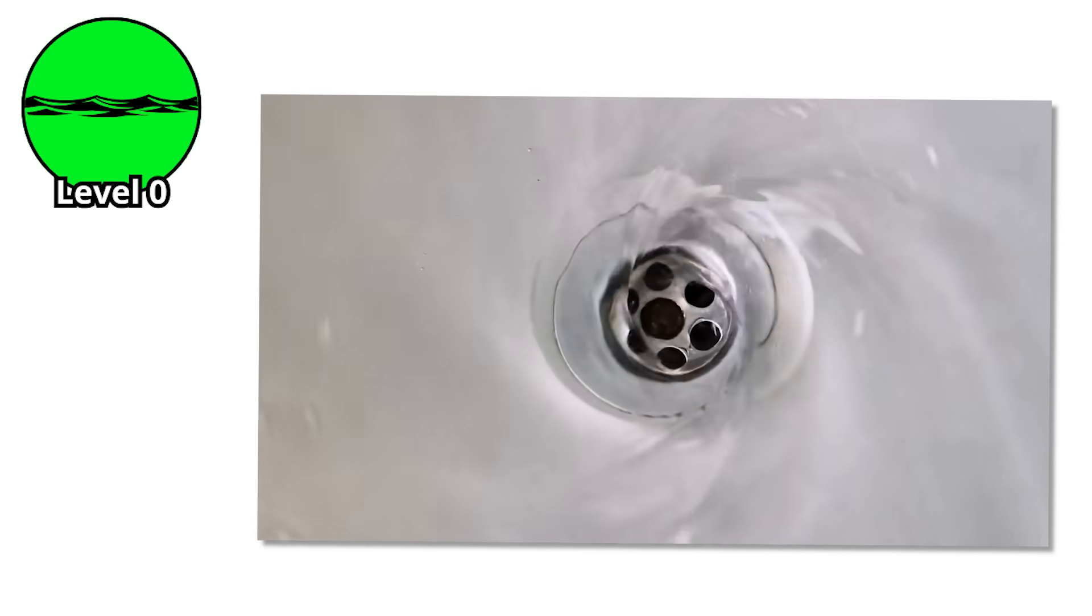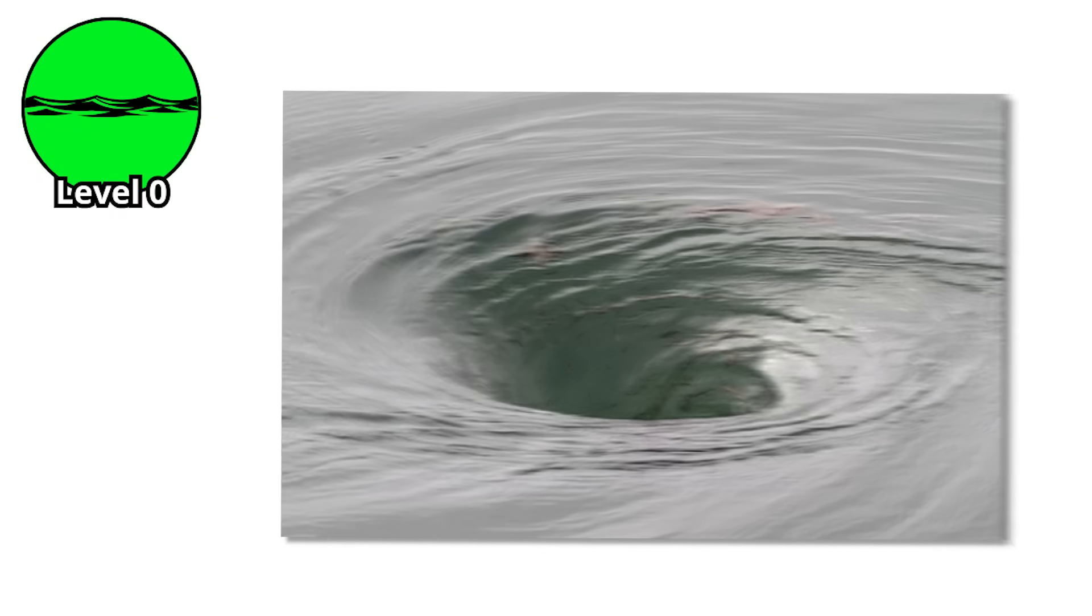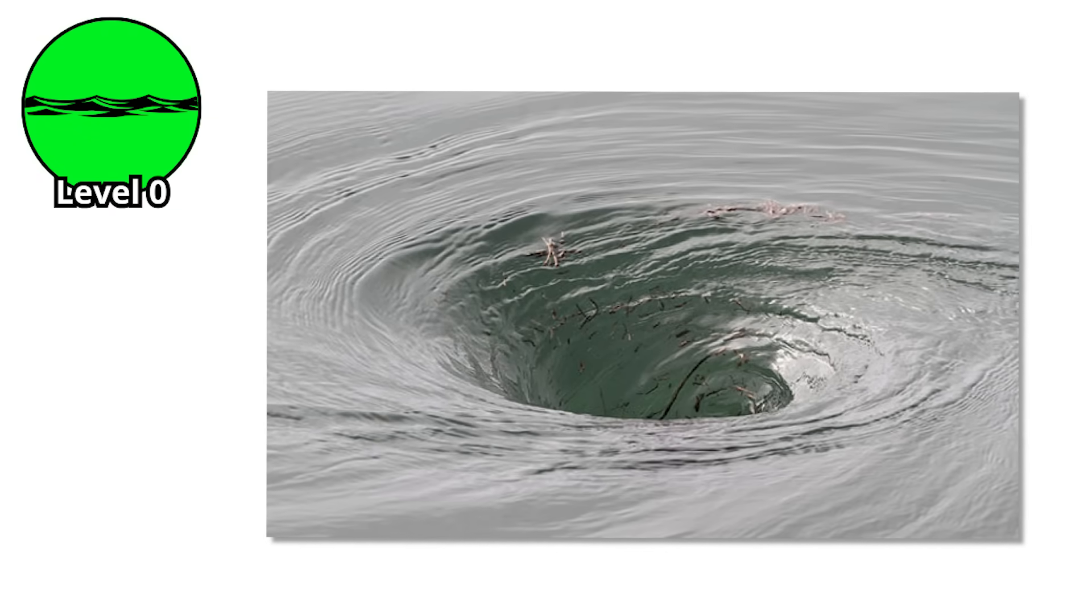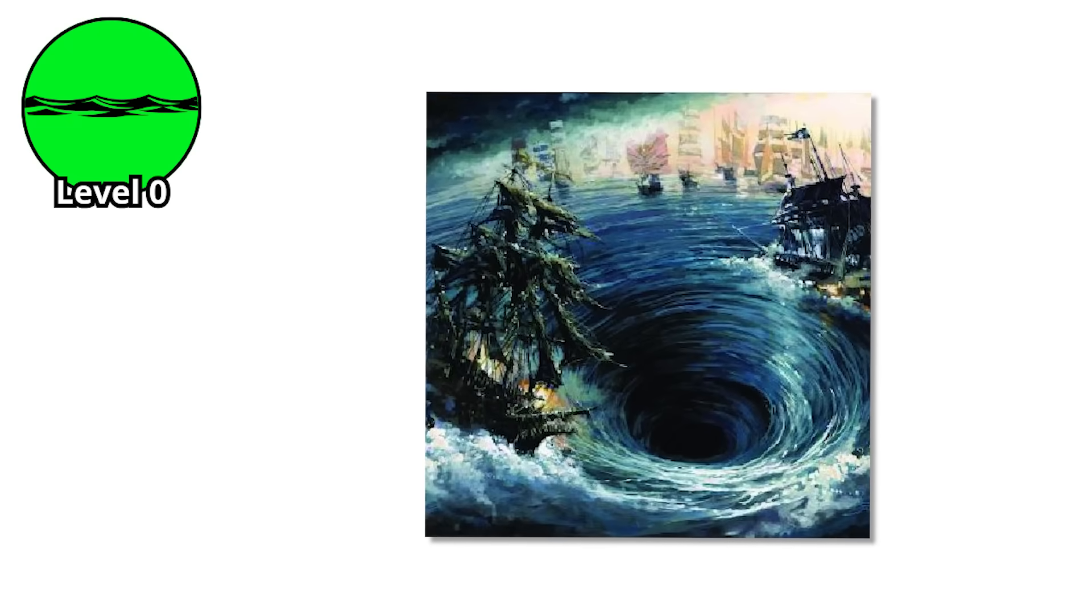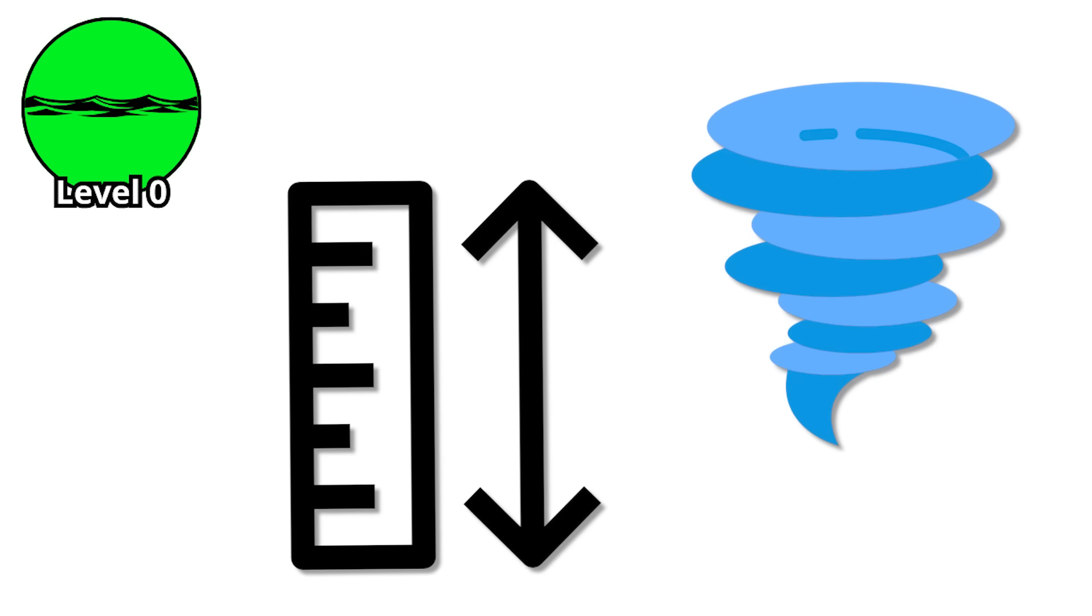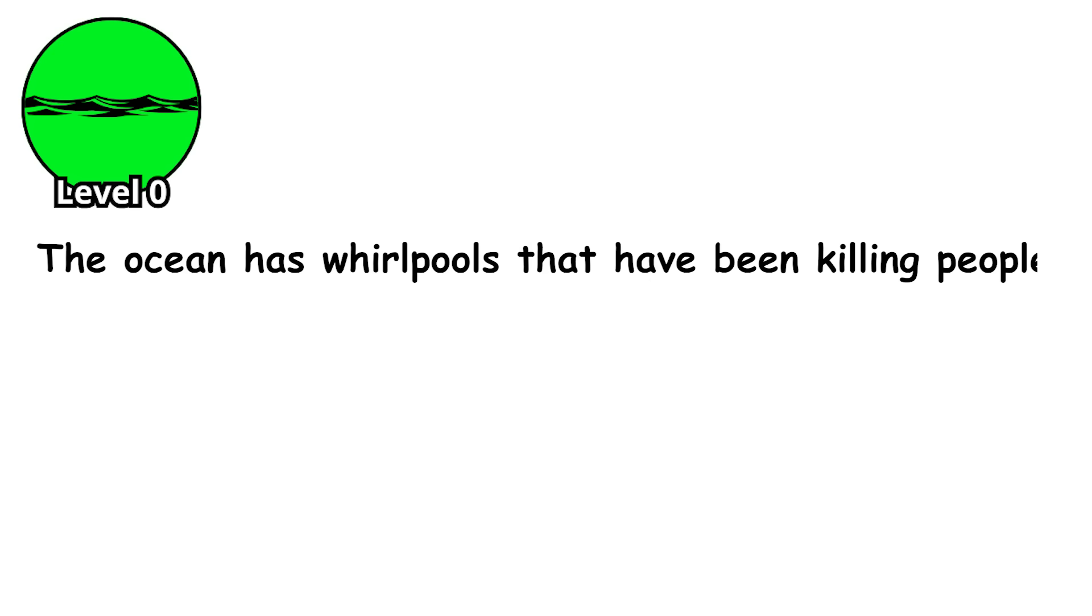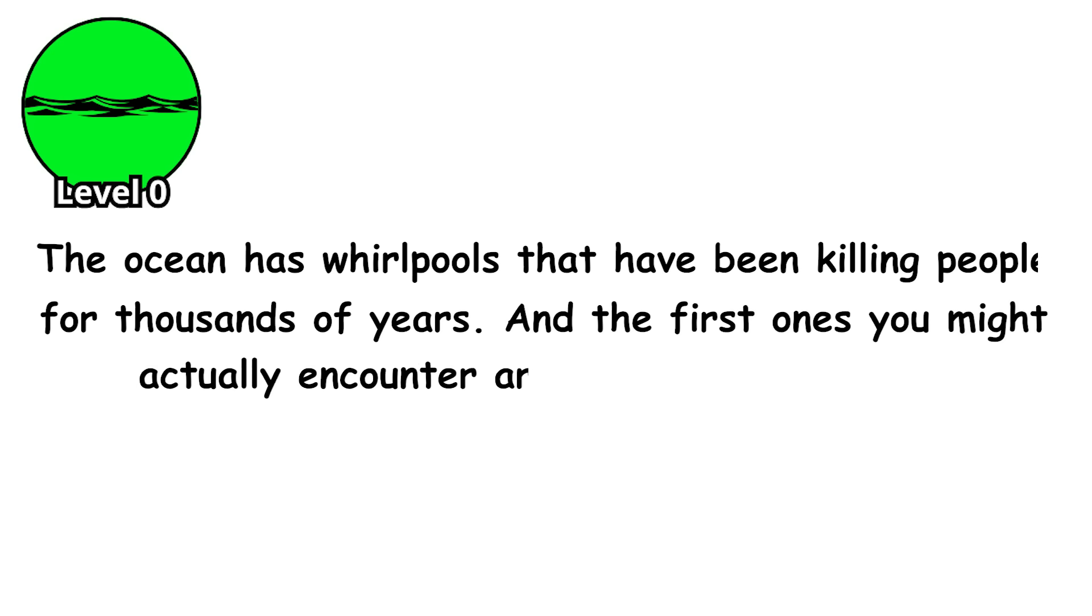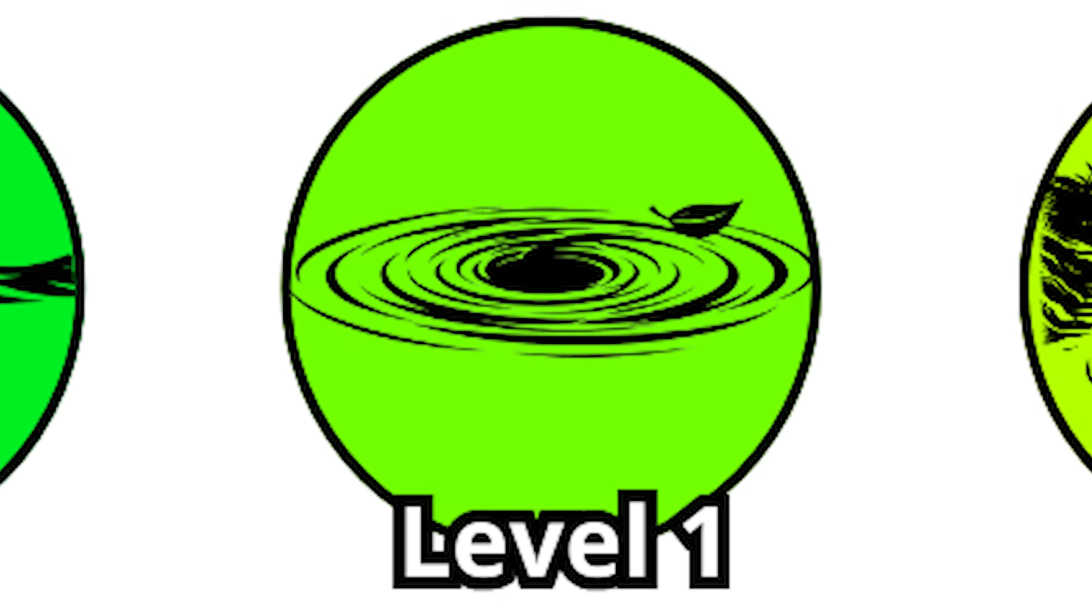That gentle rotation in your sink obeys the exact same laws as the massive oceanic vortexes that have dragged ships to the bottom. It's just a matter of scale, energy, and the sheer volume of water involved. The ocean has whirlpools that have been killing people for thousands of years, and the first ones you might actually encounter are hiding in plain sight. Level 1.